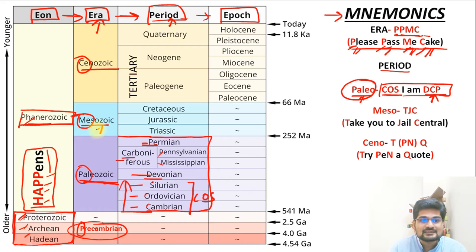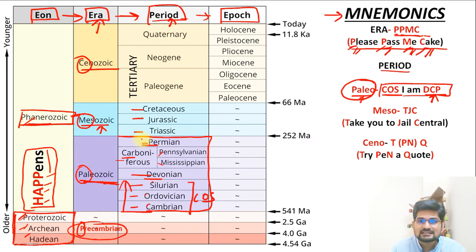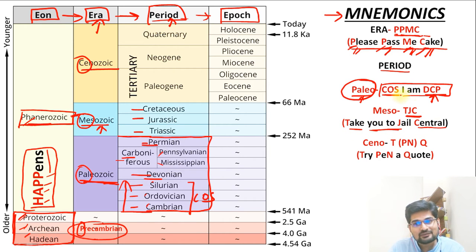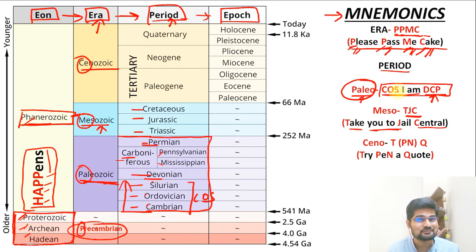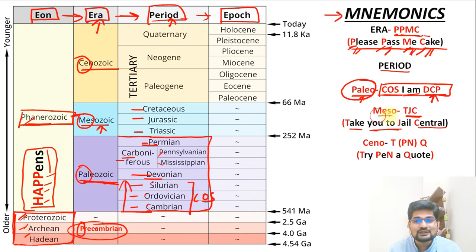The Mesozoic era has three periods: Triassic, Jurassic and Cretaceous — abbreviated TJC. The mnemonic is 'Take you to jail central.' Combining both eras: 'Cause I am a DCP, I will take you to jail central' — giving you Paleozoic followed by Mesozoic periods in sequence.